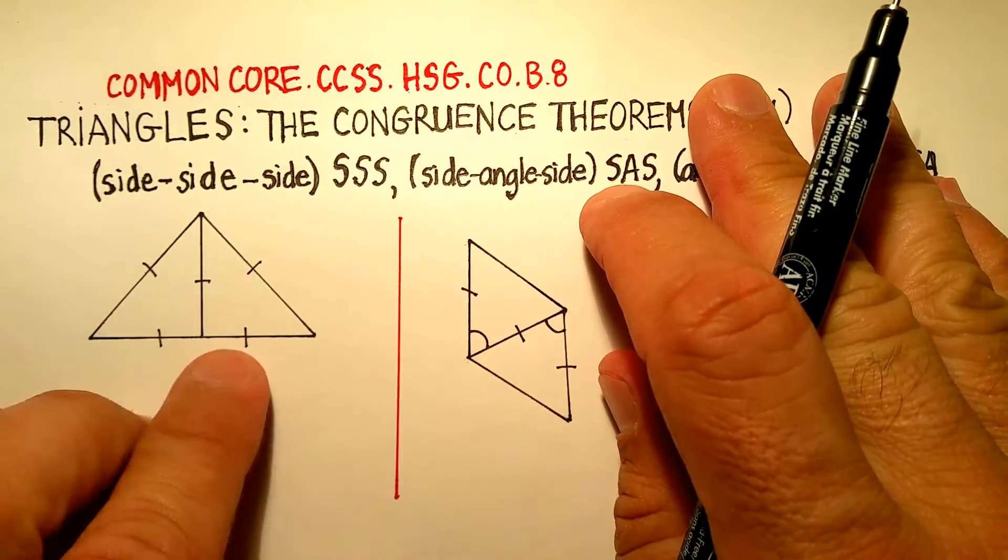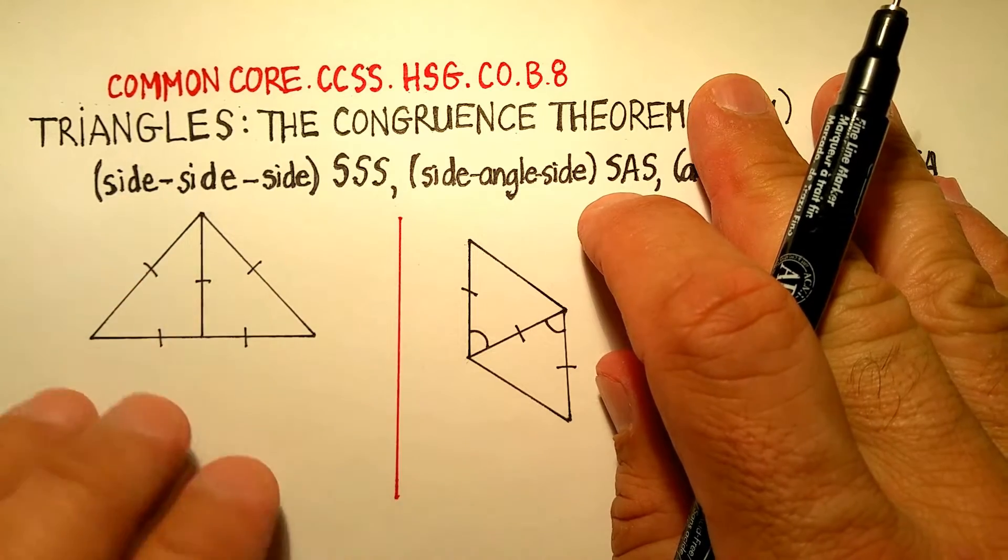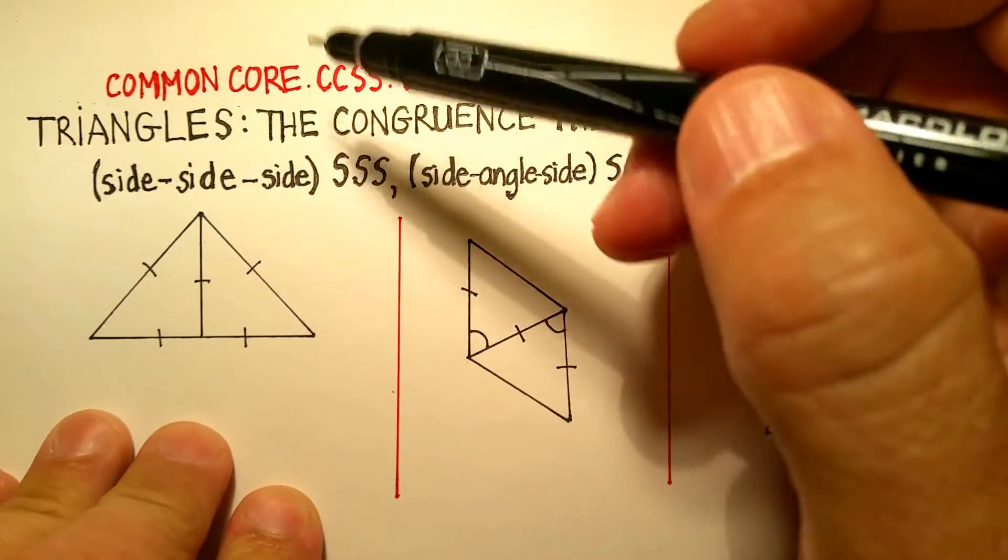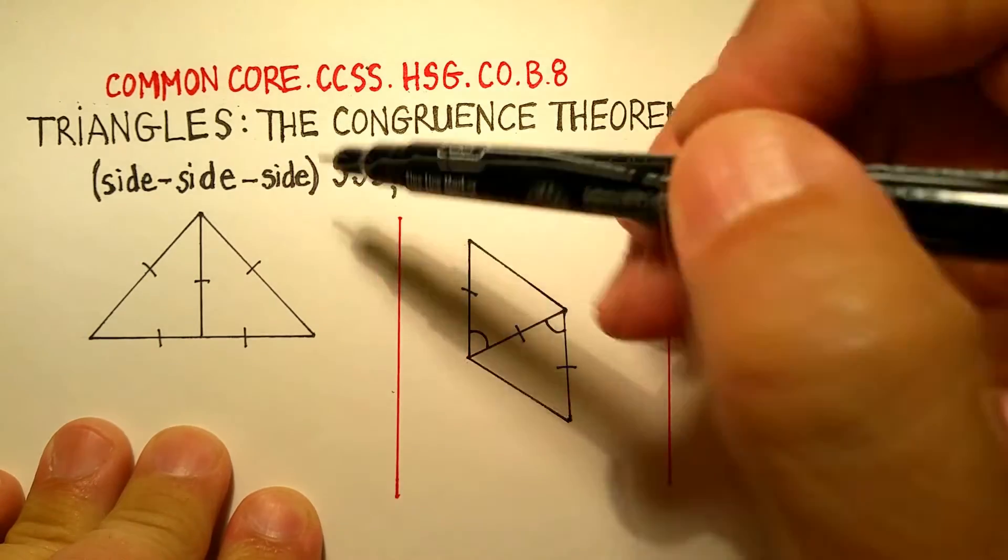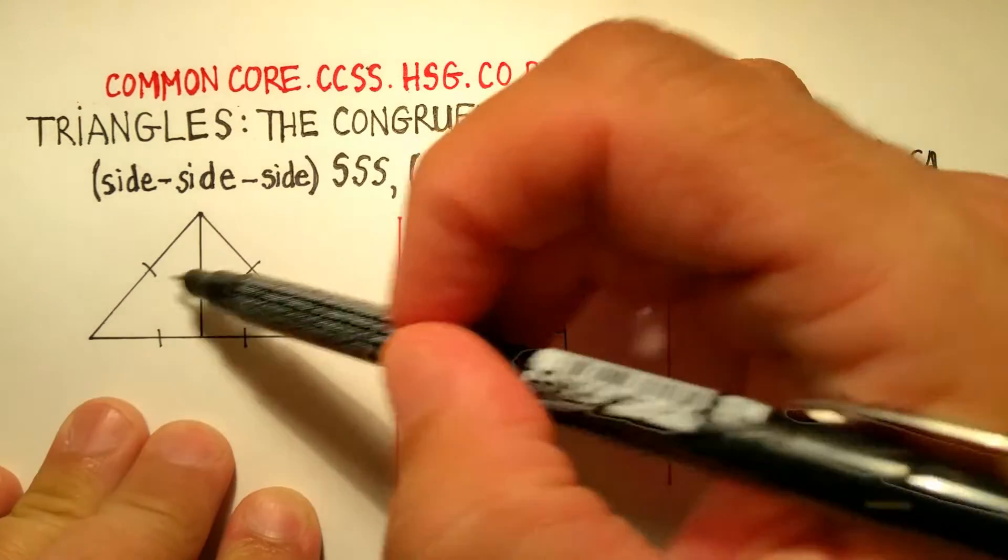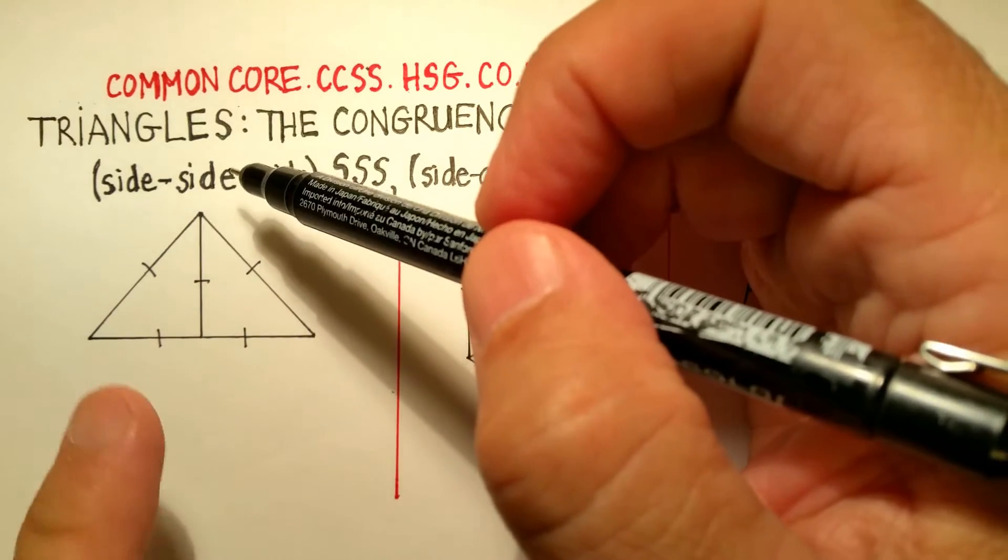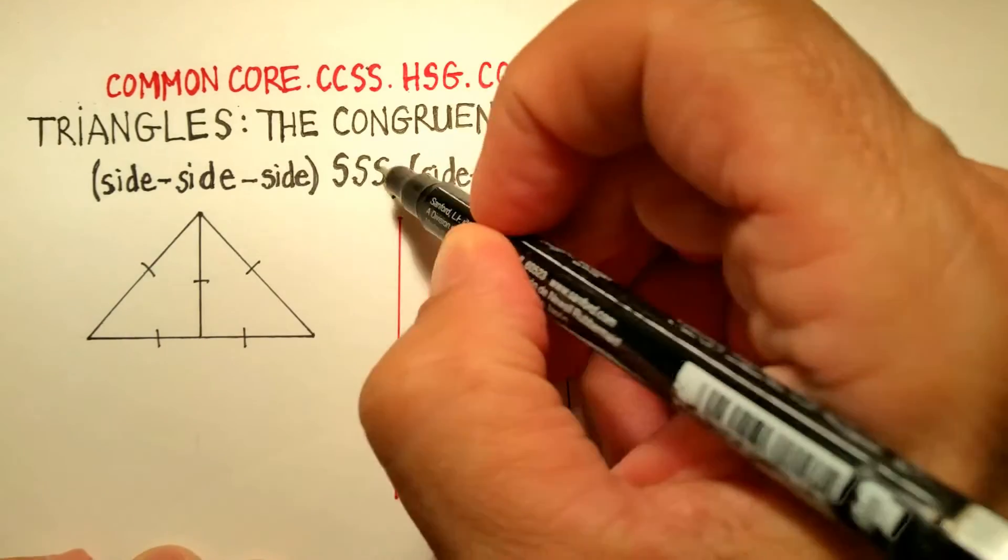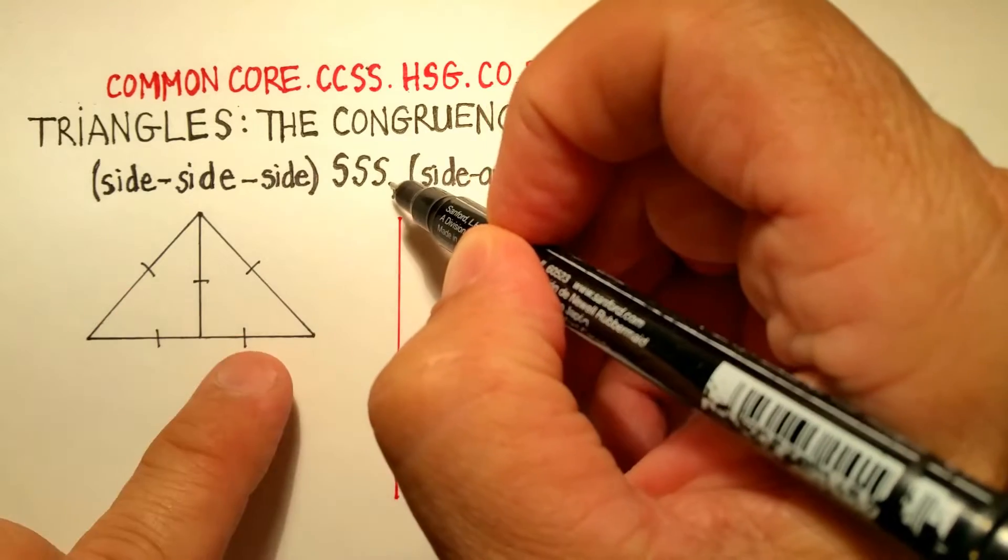I just wanted to demonstrate how these look in a practical problem. Now, basically, what these theorems say is that you can prove that two different triangles are congruent, which again, remember, means equal,